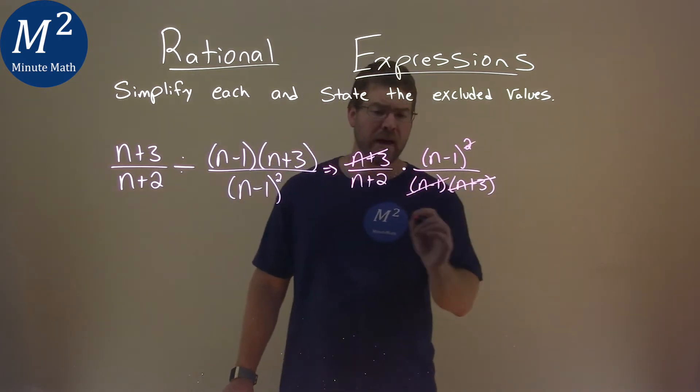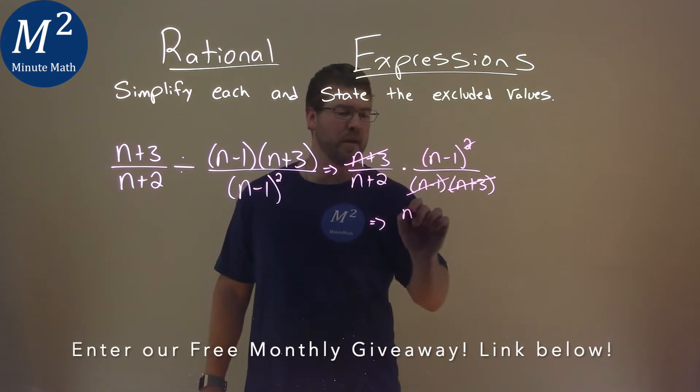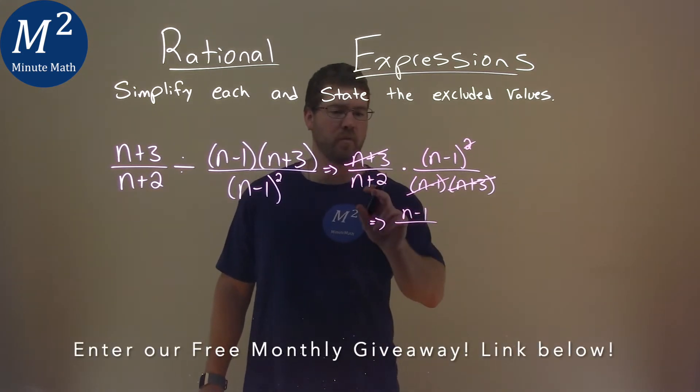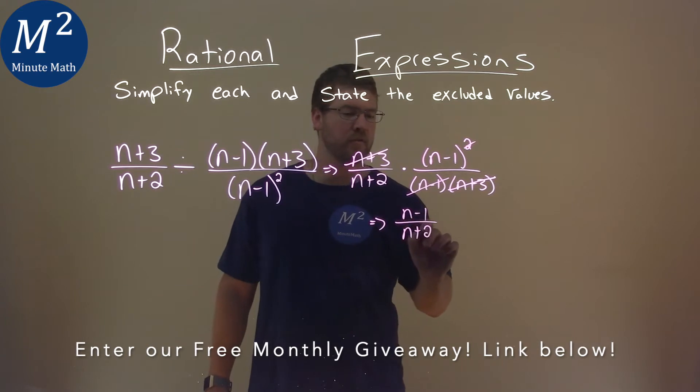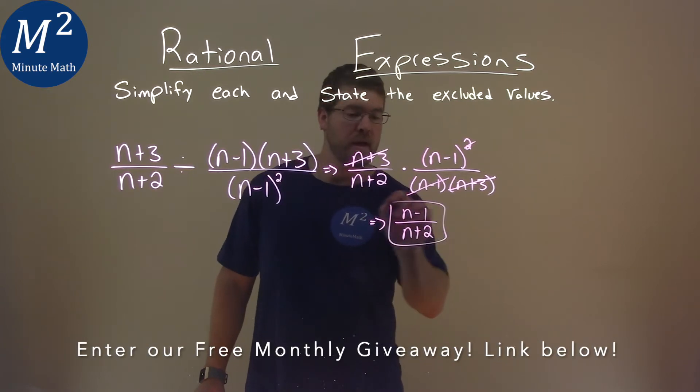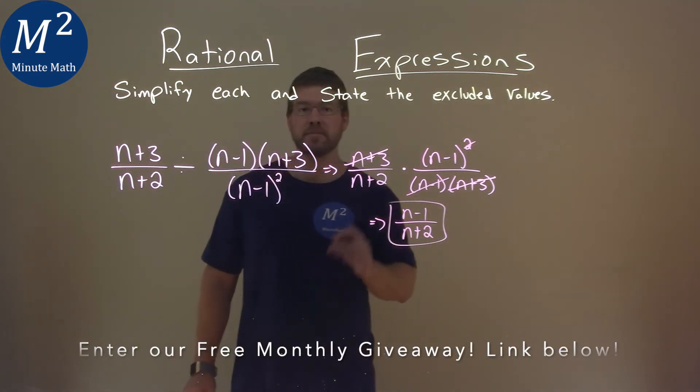So what we're left with is just the 1, n minus 1 in the numerator, over this n plus 2 in the denominator. And that is actually our original expression simplified.